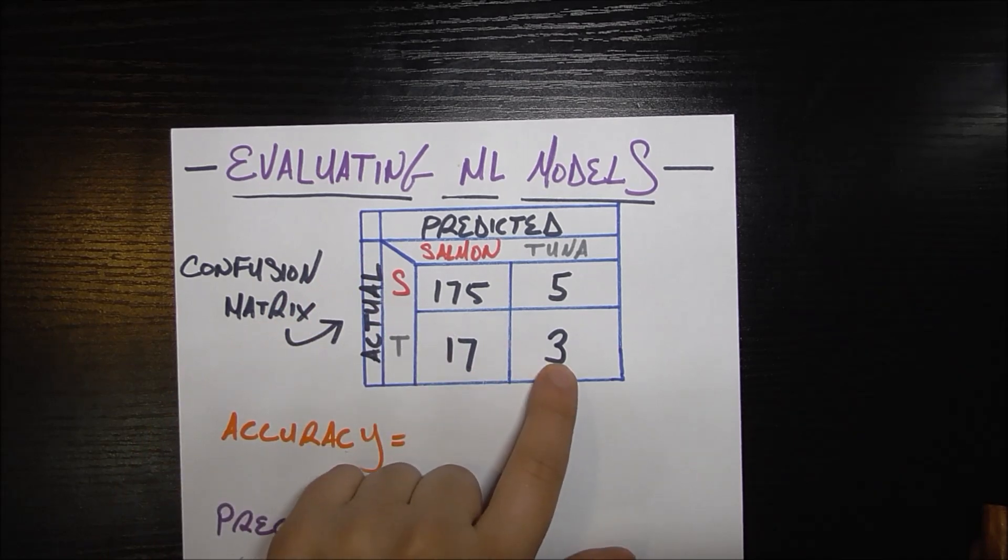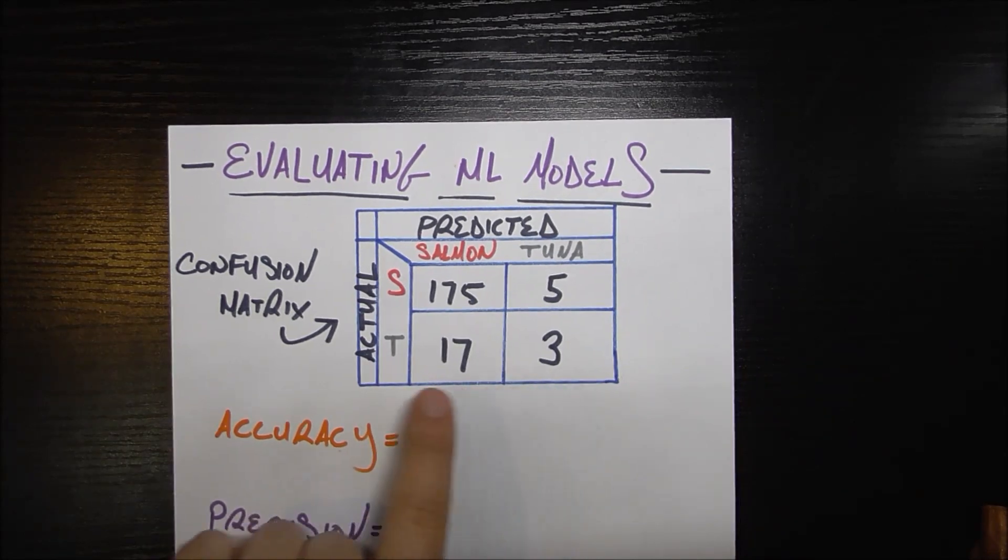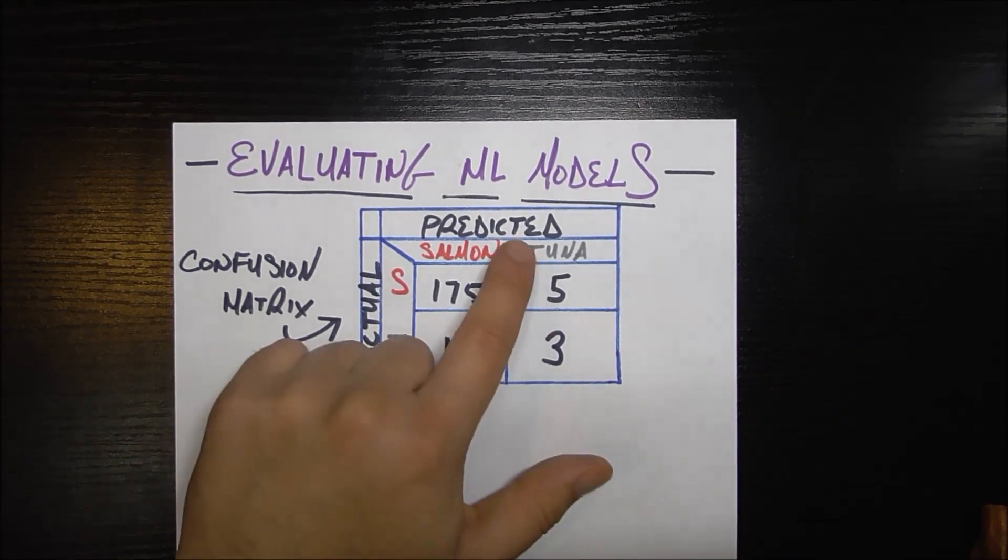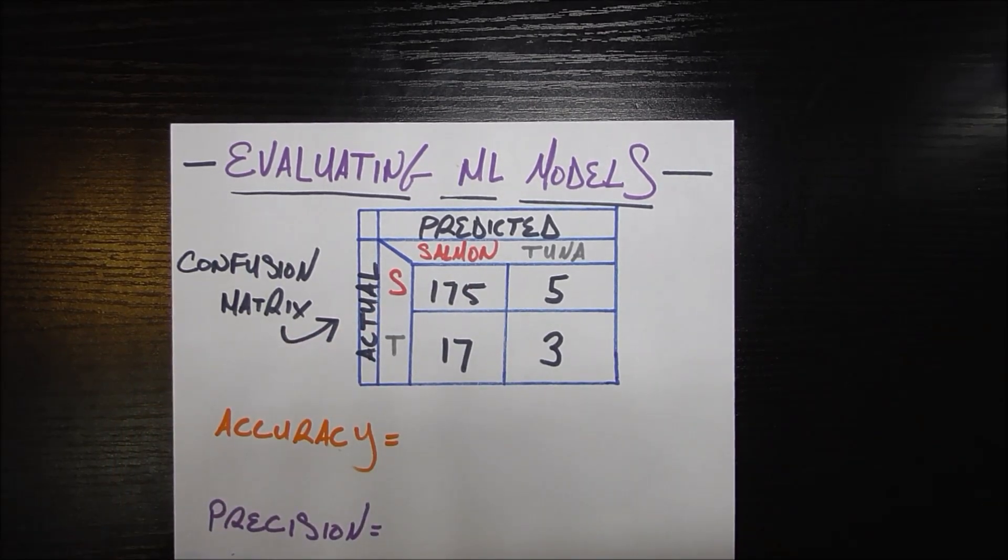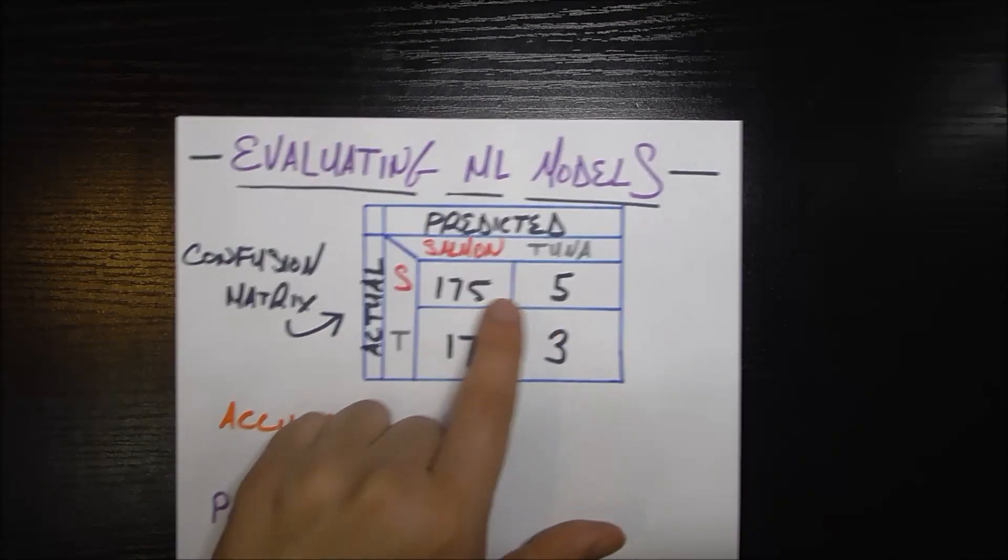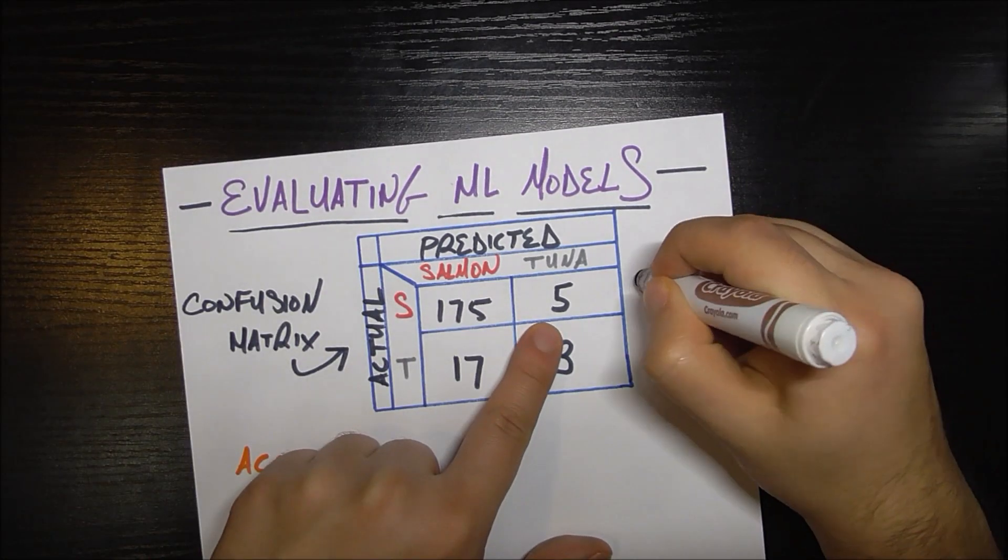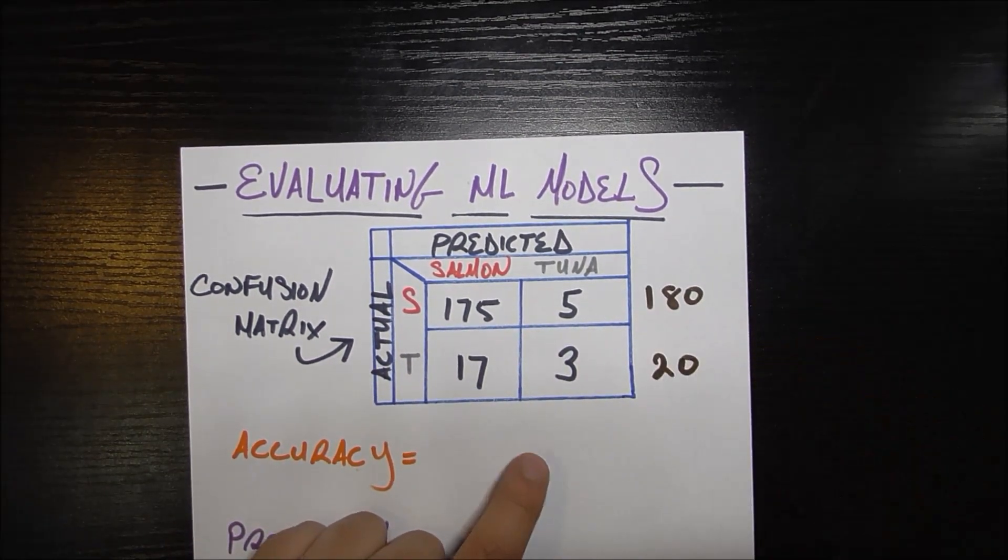In opposition we have this three here which is a correct guess. We're saying here that there was three cases where it was actually a tuna and we predicted it to be a tuna. One thing to note right here is that we had many more salmon than tuna, so we had 180 salmon (175 plus 5), so there's 180 actual salmon and 20 actual tuna.